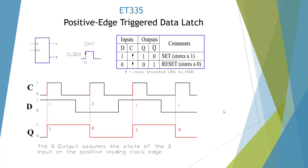Here we have an edge-triggered device. An edge trigger is only going to work on that edge — it captures data right at that split second that the signal goes from low to high. This is a positive edge. You'll notice a triangle symbol, which means positive edge, so we're looking at the low-to-high transition — that's a positive edge.